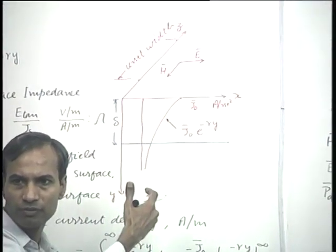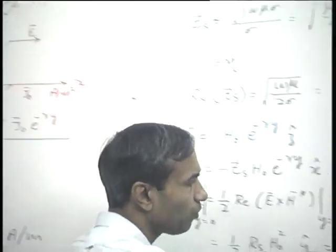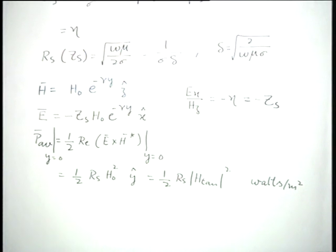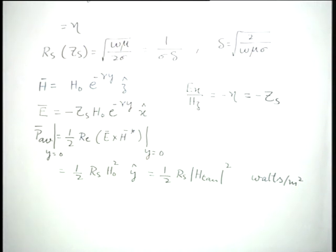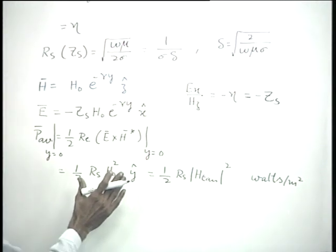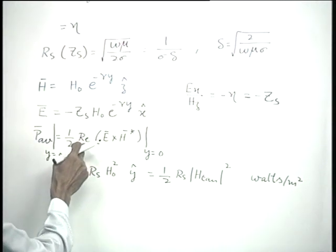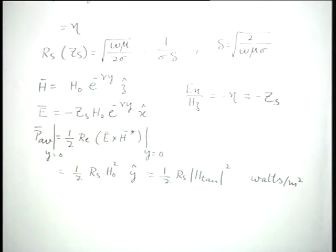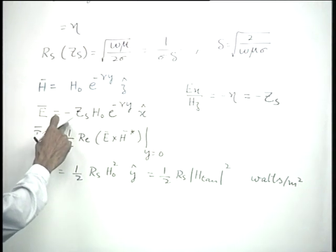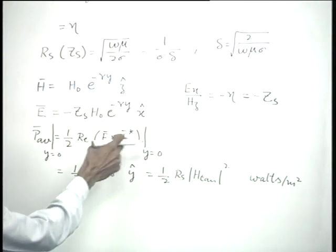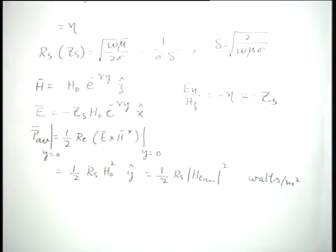This result shows that when E and H are not in phase, the product is complex, and we must take the real part for the power flow. Since the surface impedance is complex, E and H are not in phase in a good conductor. This aspect will come up again and will be pointed out at that time.